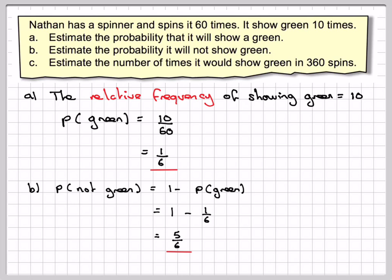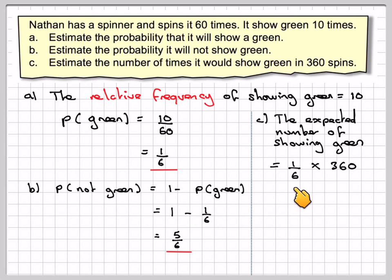Estimate the number of times it would show green in 360 spins. Well, that is going to be the probability that it will show green, which is 1 sixth times the number of spins, which is 360.